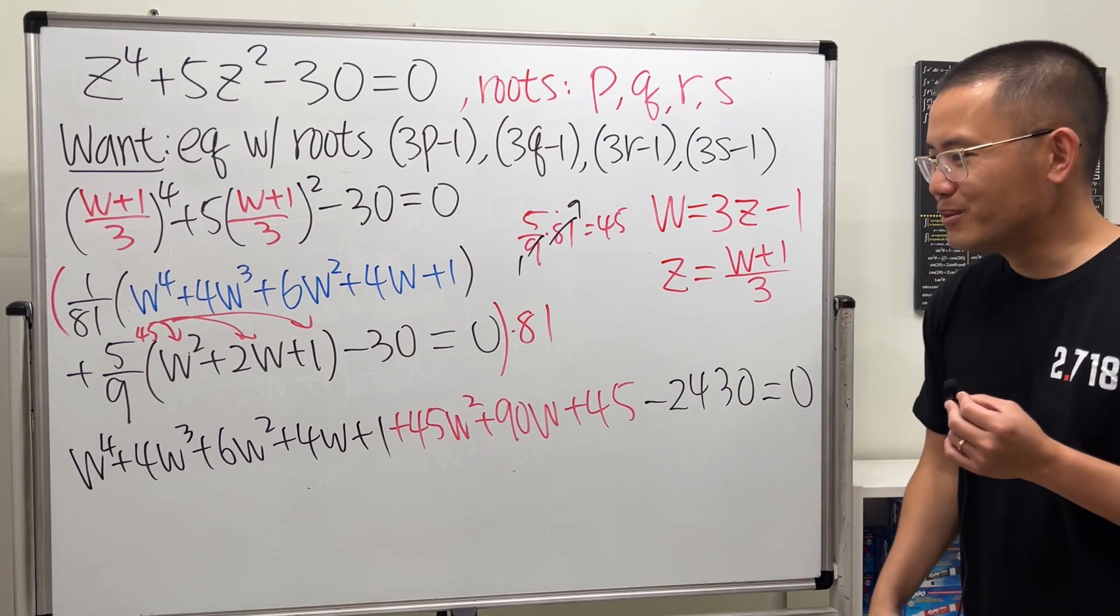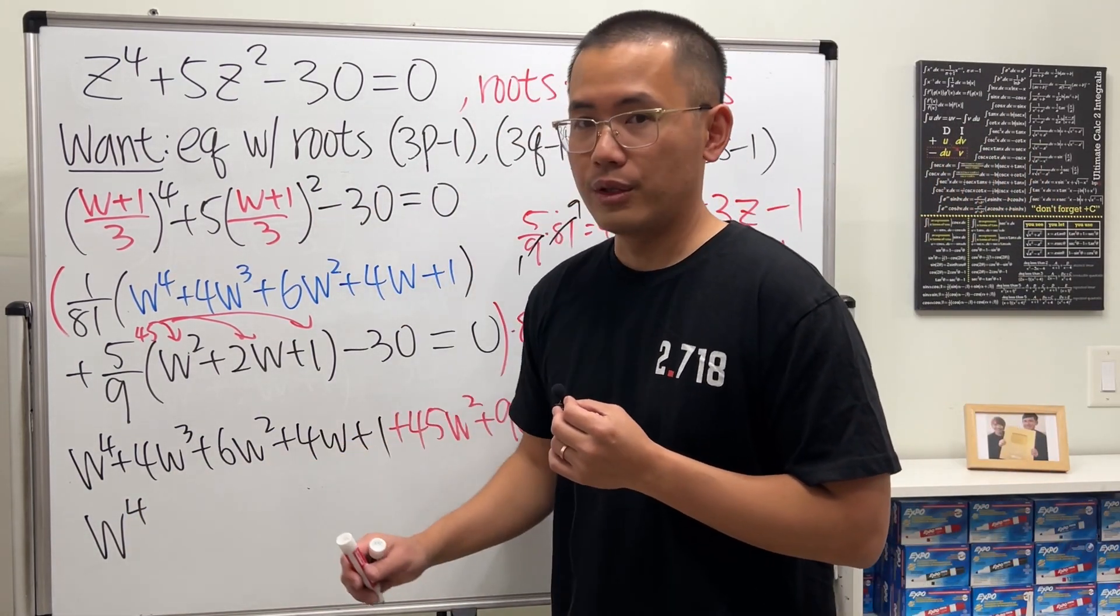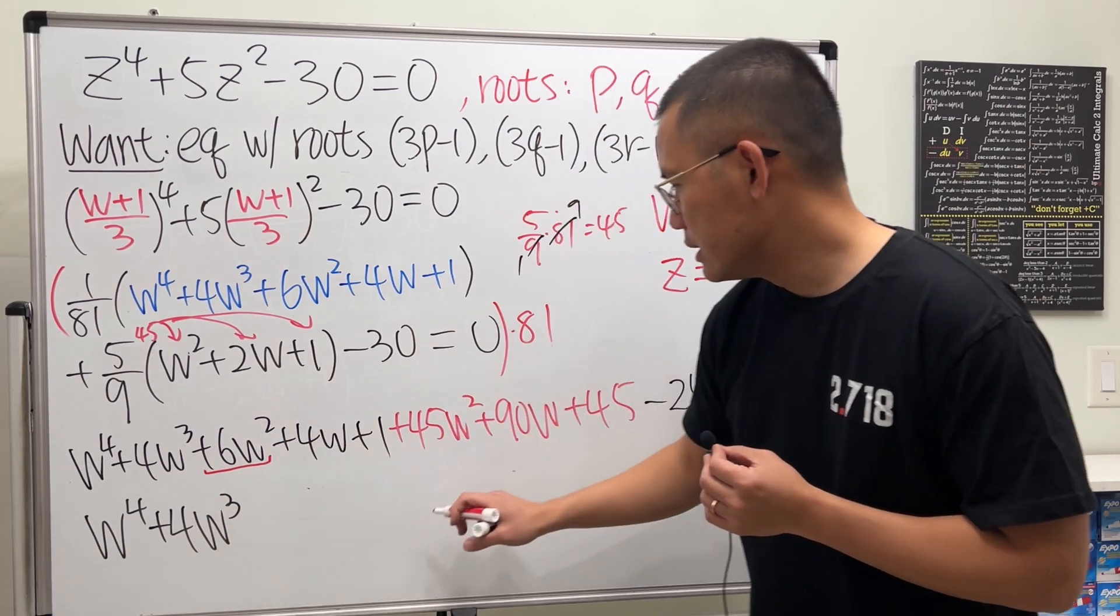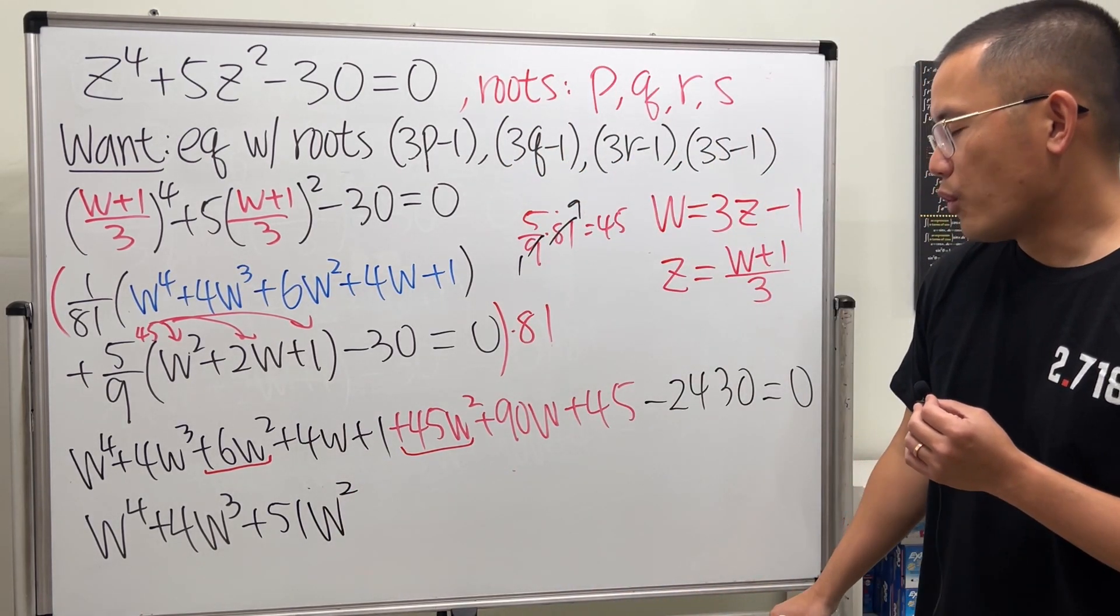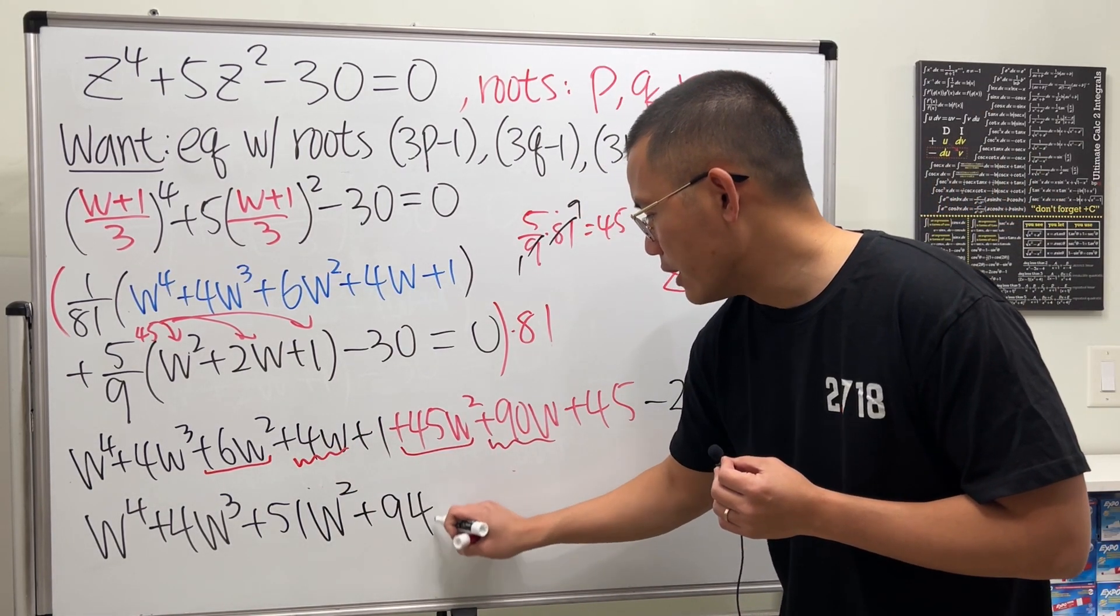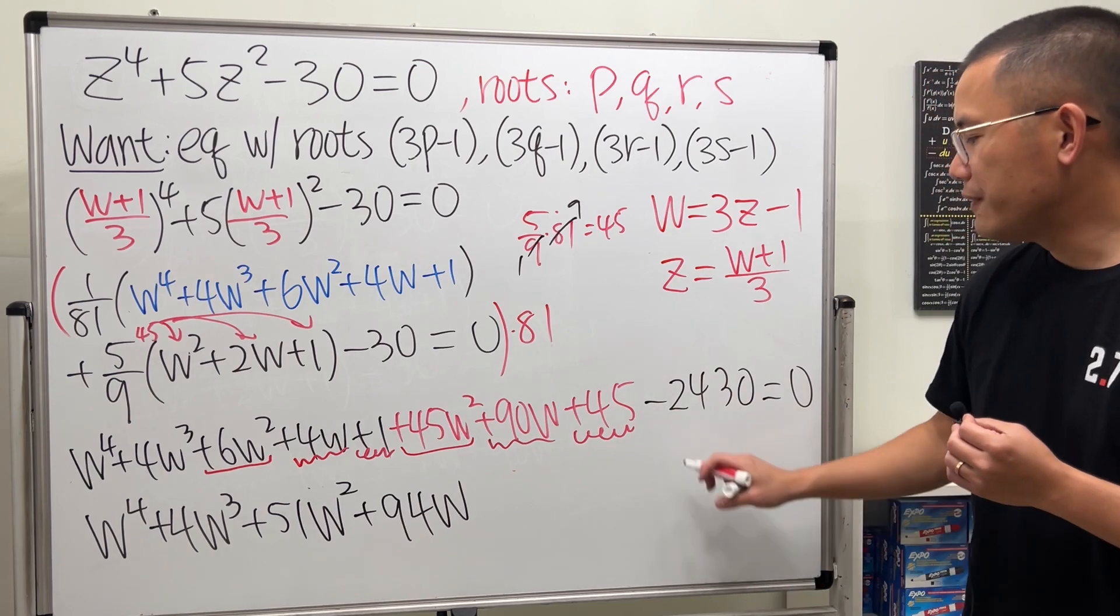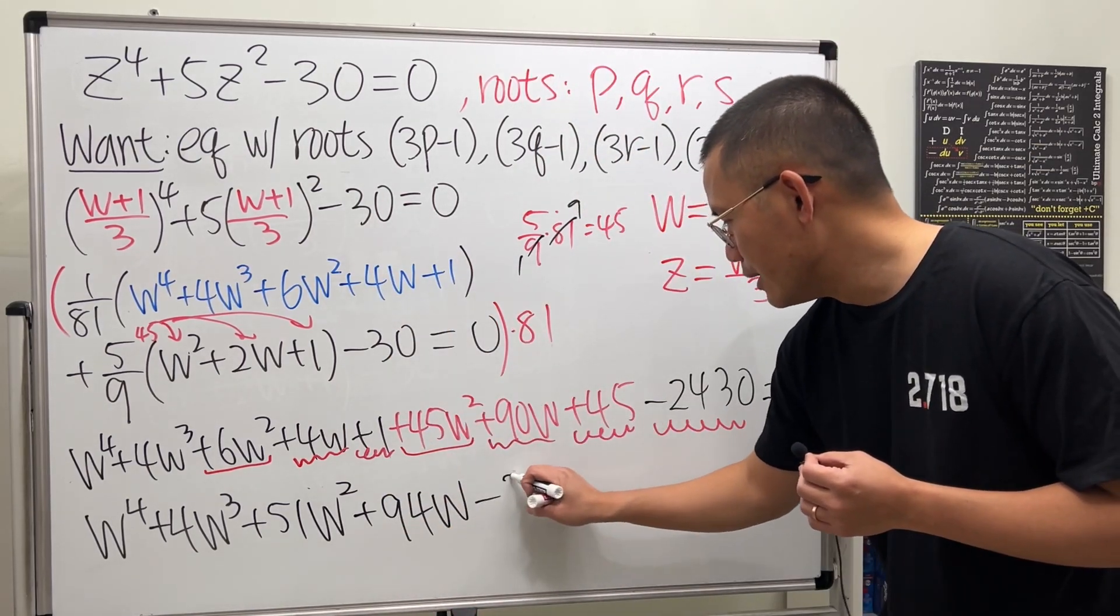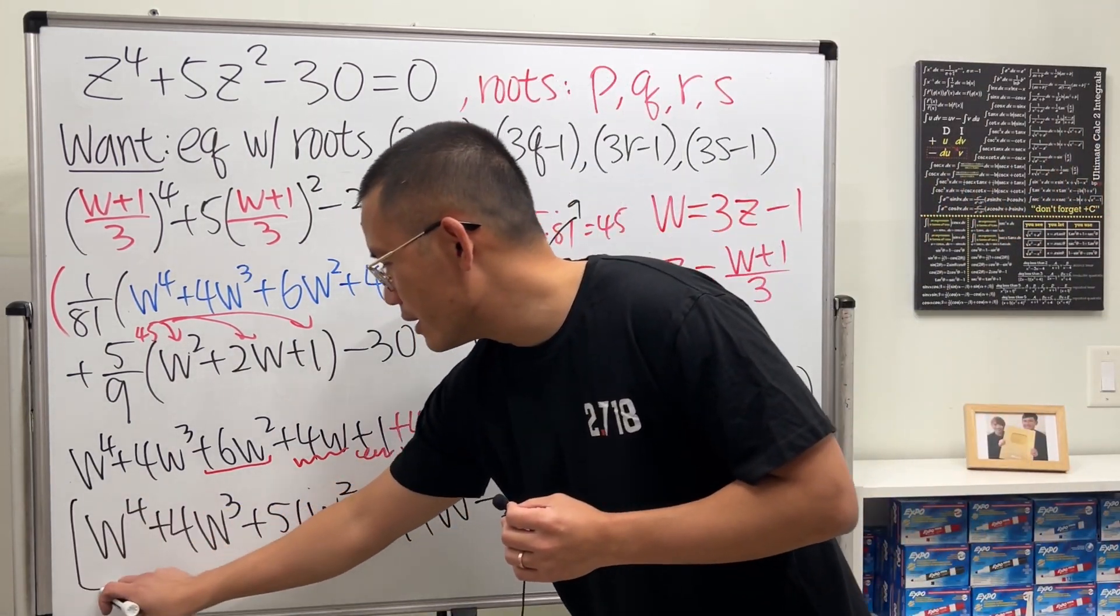So finally, we just have to combine like terms, and that will be it. All the way in the front, we have w^4. And then for the w^3, this is only 1. So plus 4w^3. As for w^2, we see this and that. So together, we have plus 51w^2. And then for w, here we have 4w + 90w. So that's plus 94w. And then we have 1 + 45 - 2430. You can do that in your head, but I'm just going to take a look at the answer, which is minus 2384. And all that is equal to 0.